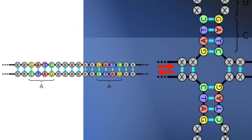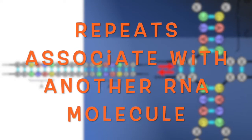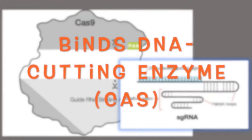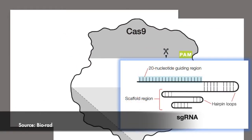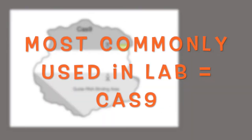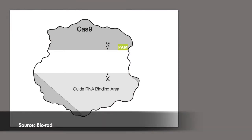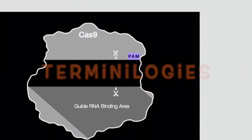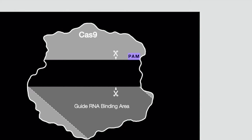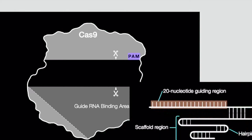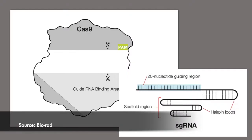These repeats would be processed and associate with another RNA molecule before binding a DNA-cutting enzyme known as CRISPR-associated, given the name 'Cas' followed by a number. The most common one is Cas9, but there are different Cas enzymes able to cut DNA. Cas9 can recognize particular DNA sequences when the guide RNA guides it.